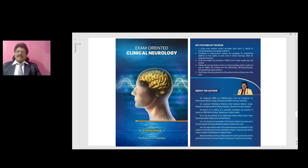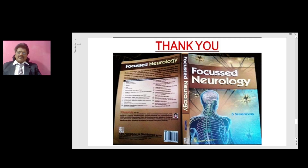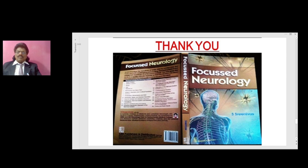The other important concepts of clinical neurology are in my book Exam Oriented Clinical Neurology, written by Dr. S. Srinivas and published by White Army. This book is very useful for students appearing for clinical neurology exams. The other book I wrote is Focused Neurology, published by CBS Publishers and Distributors, containing all essential elements of theoretical neurology. It is very useful for students appearing for orals or viva, and is available online from all leading booksellers including Amazon.